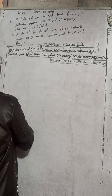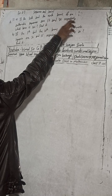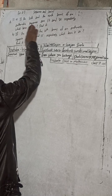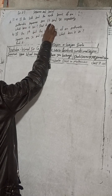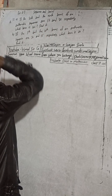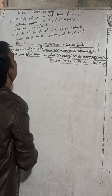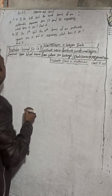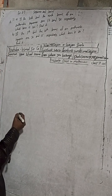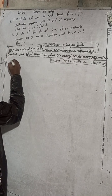Here the question is: if the sixth and the ninth term of an arithmetic sequence are 52 and 76 respectively, which term is 100? Find it. So this is question 12a.